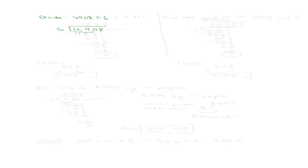6 does not go into 4, so now I'm going to try 49. 6 does go into 49 — it goes 8 times. So I write 8 in the rightmost digit, and 6 times 8 gives me 48. I multiply my quotient so far times 6 to get 48, then subtract. 49 minus 48 gives me 1. I bring down the next digit, which gives me 10. Does 6 go into 10? It does — 1 time. 1 times 6 is 6. I subtract, and my difference is 4. Now I bring down the 8.